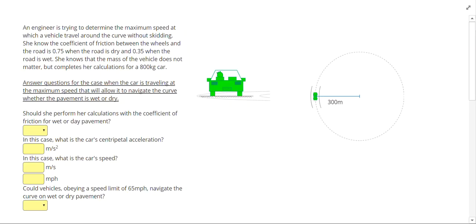In this problem, an engineer is trying to determine the maximum speed at which a vehicle will travel around the curve without skidding. She knows the coefficient of friction between the wheels and the road is 0.75 when the road is dry and 0.35 when the road is wet. She knows that the mass of the vehicle does not matter, but she completes her calculations for an 800 kg car. Answer the questions for the case when the car is traveling at the maximum speed that will allow it to navigate the curve, whether the pavement is wet or dry.